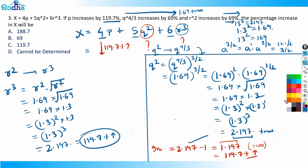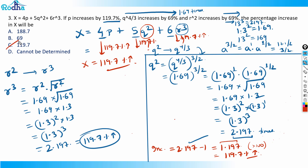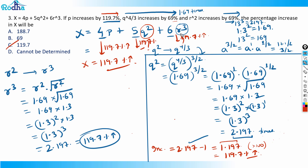All three terms increase by 119.7%, so the overall value of x also increases by 119.7%. This is consistent with our earlier example: when x = a + b + c and all terms increase by the same percentage, we can determine the answer. Here, p increases by 119.7%, q² also increases by 119.7%, and r³ also by 119.7%, so x increases by 119.7%.